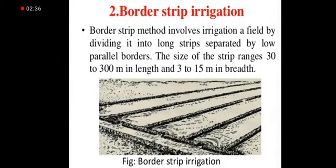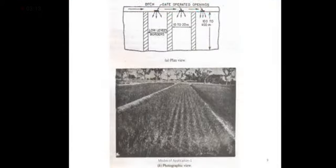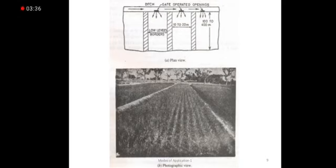Next is border or strip irrigation. Here in the field, we make a border in the exterior layer and the water for irrigation is flooded through the border, reaching the field to the corners and centers. The border strip method involves dividing the field into strips separated by two parallel borders. The size of the strip ranges from 30 to 300 meters in length and 3 to 15 meters in width. In the picture, we can see the main levees available for irrigation, subdivided into three irrigation strips, with separation of 10 to 20 meters. Through these ditches, the water flows and reaches the entire land.